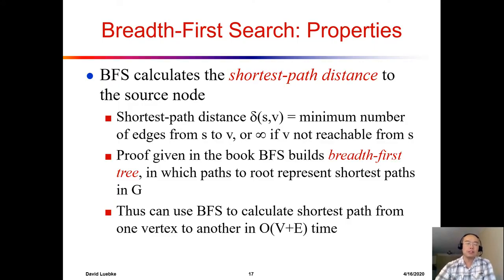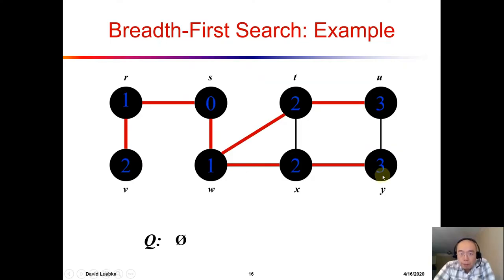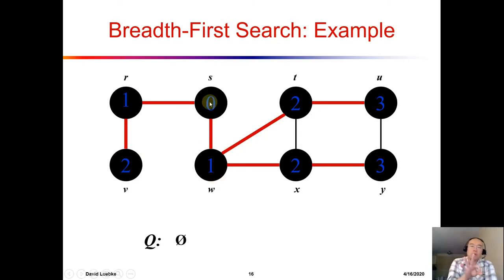Breadth-first search helps us visit all edges and all nodes and generates a tree structure. In addition, breadth-first search calculates the shortest path distance from any node back to the source node, which is the tree root. For example, node y has a distance of 3, meaning from y we follow the red path: y to x (one hop), x to w (another hop), and w to s (another hop) — a total of three hops, and that is the guaranteed shortest path.